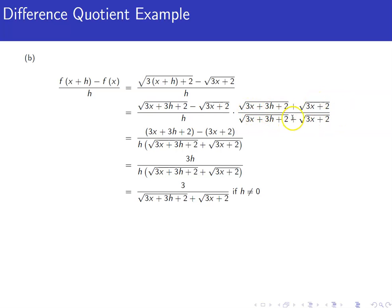Square root of 3x plus 3h plus 2 plus square root of 3x plus 2. The reason why we multiply by the conjugate is notice that when we multiply everything out, first terms together just makes it 3x plus 3h plus 2. The outer and the inner terms are the same except they have opposite signs.